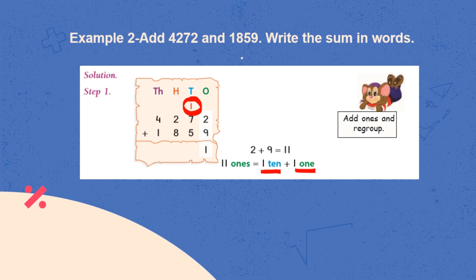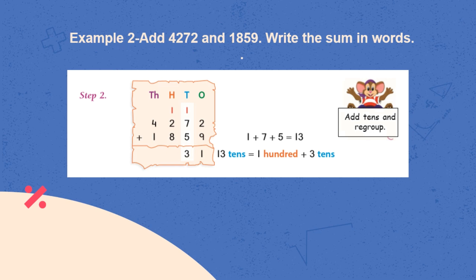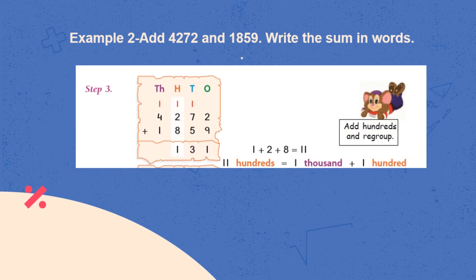Now, adding 1, 7, 5 at 10's column will give us 13 tens. 13 tens will be equal to 1 hundred and 3 tens. So, 1 hundred will be sent as carry over. Now, adding 1, 2, 8 at 100's place.